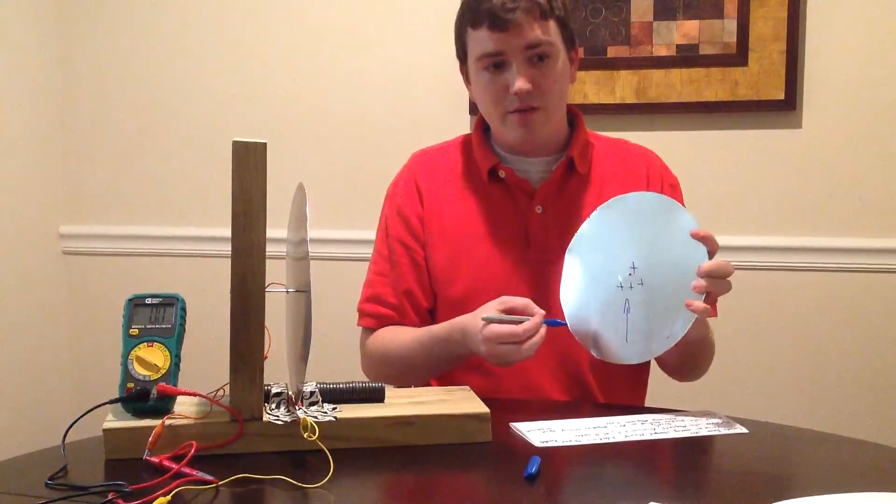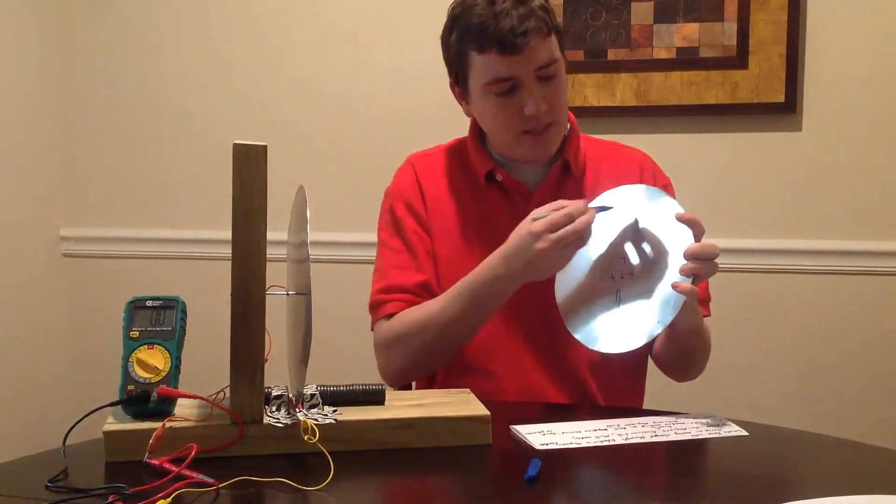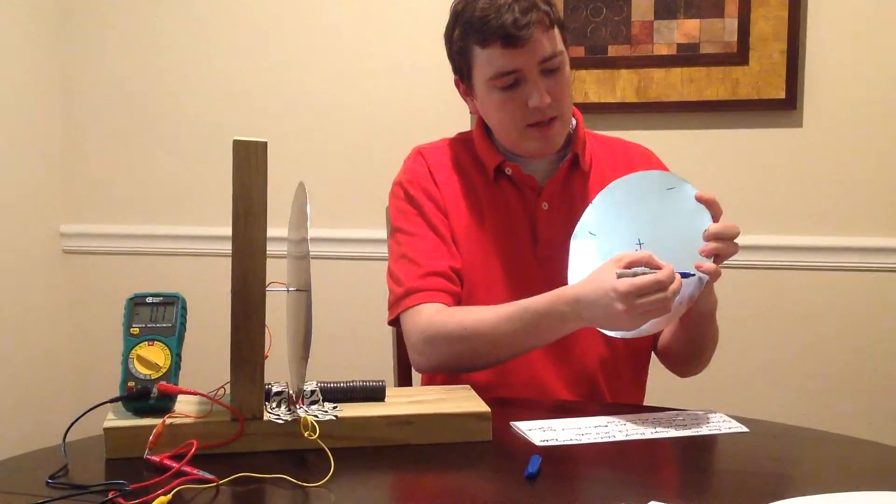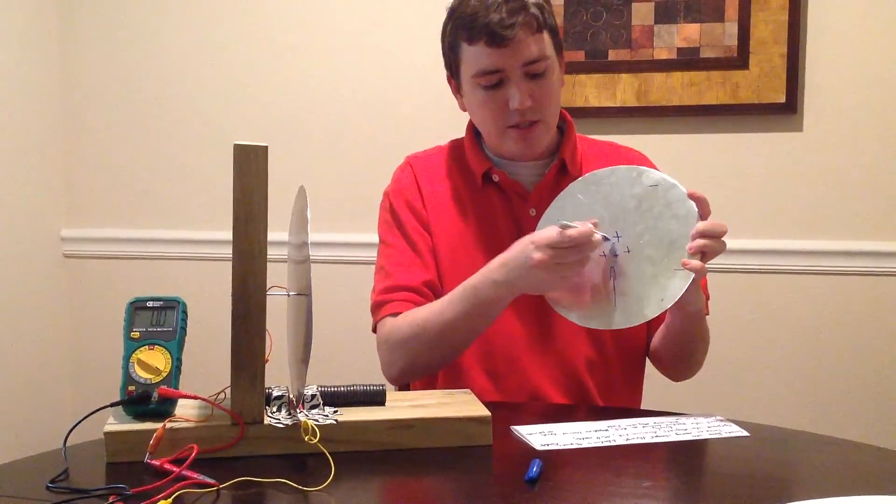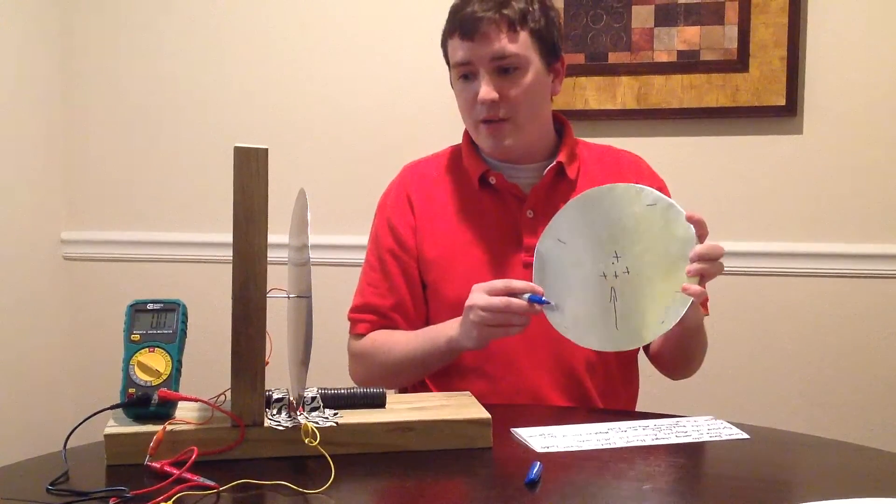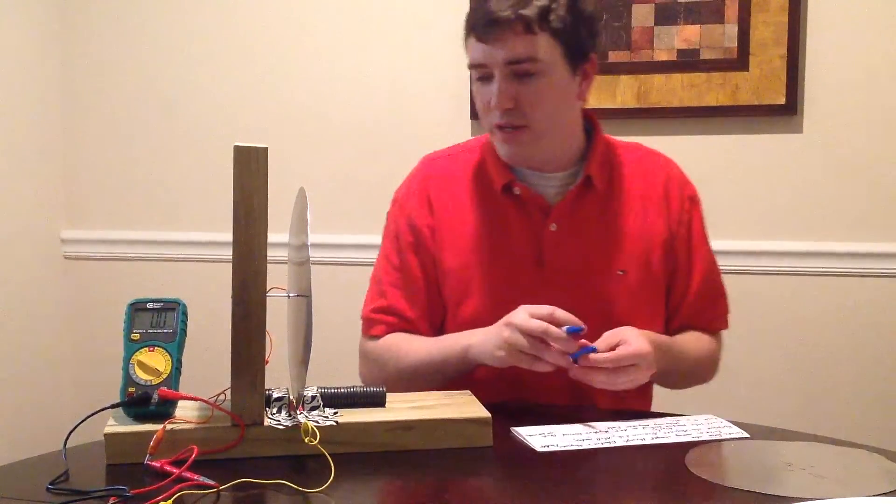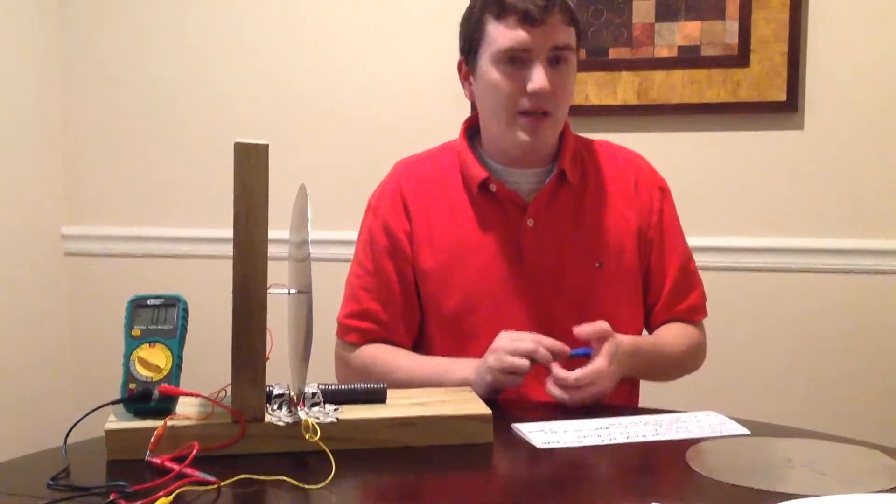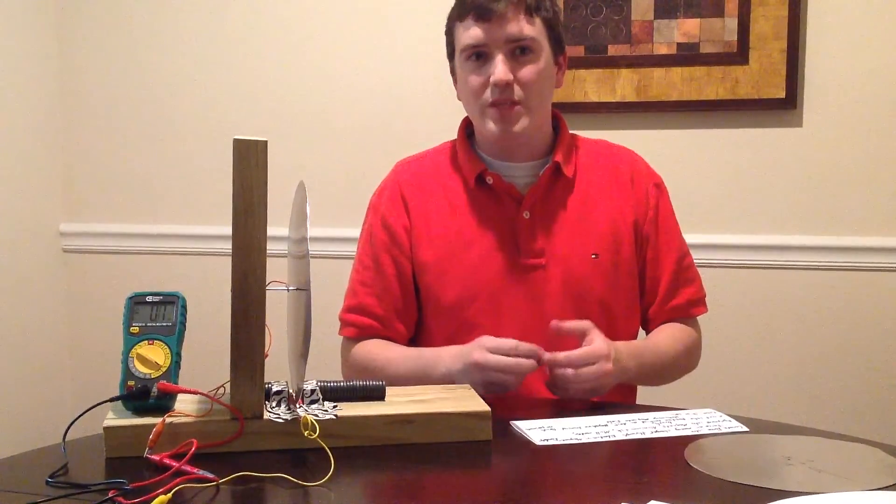Meanwhile, the negative charge particles are moving towards the outside of the disc, so the terminals connected in the center and the outside of the disc have a net potential difference. That is how the homopolar generator works, and how it can use an electric charge distribution and the Lorentz force to generate an electric potential.